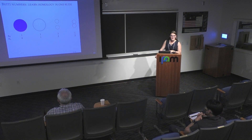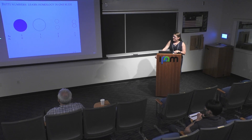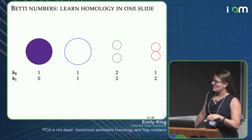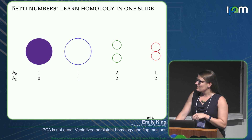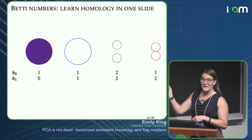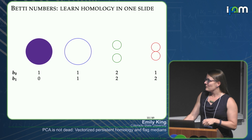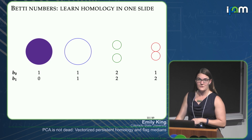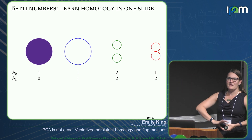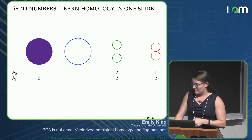Exactly right. The zeroth Betti number counts the number of connected components: one, one, two, one. The first Betti number counts the number of holes: zero, one, two, two. These four spaces all get four different pairs of numbers. We could deform a shape and as long as it remained connected with one hole, it would still have Betti numbers (1,1). There are higher-order Betti numbers for two-dimensional voids and higher, but for our main application we only use these two.